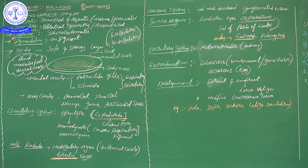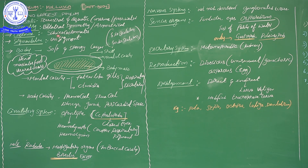Regarding the coelom character, mollusca is similar to arthropoda and annelida. The coelom type is schizocoelom — which is one type of eucoelom. This is a characteristic shared with arthropoda and annelida.